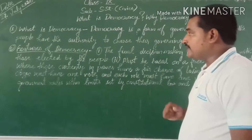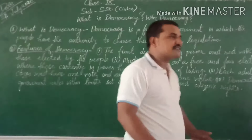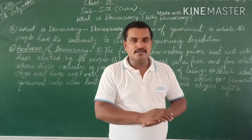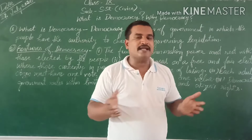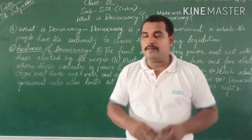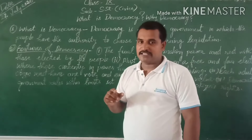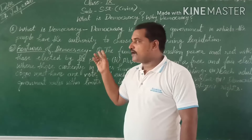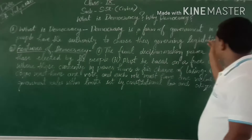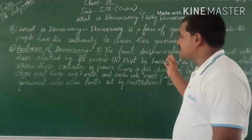The next topic — in the book you will see a discussion between a teacher and students. I think there is no need to explain those discussions; we have to know only the theme, which is: democracy is a form of government in which the people have the authority to choose their governing legislation.